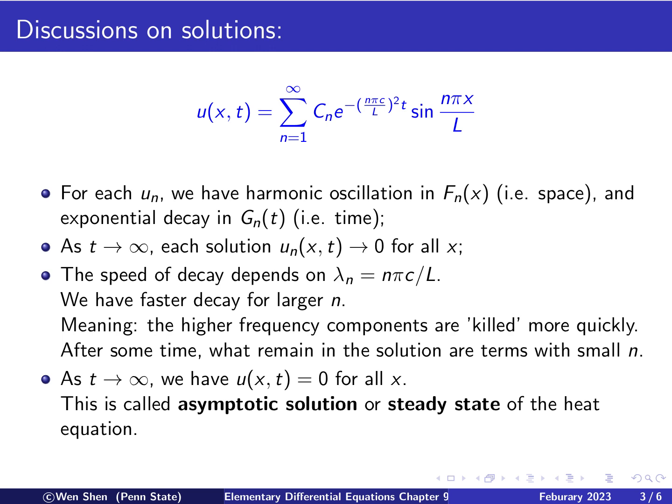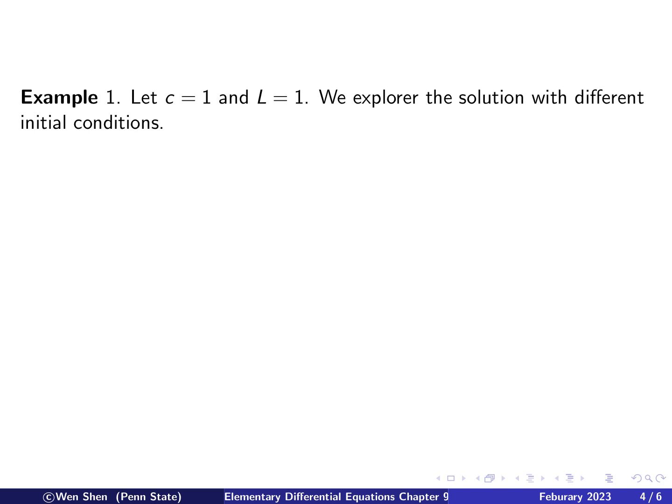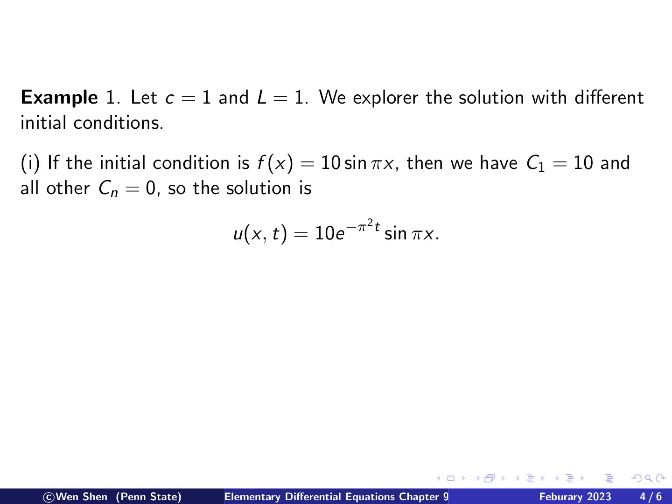So what does it mean here? So here we see that we have a physical problem that you have a rod of length L, and you put the temperature at the two ends to be 0, and you have initial temperature distribution. And then you let the temperature evolve in time. And then eventually, in the end, the temperature will become constant 0 throughout the rod as time goes to infinity. Okay, so now we take an example where we will explore the solution with different initial conditions and see the effect of it. For simplicity, we just set c to be 1 and L to be 1.